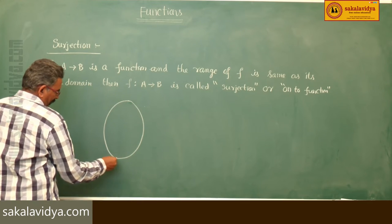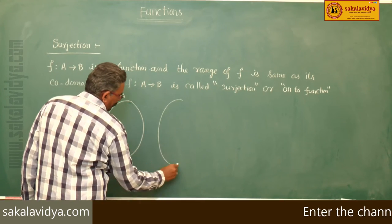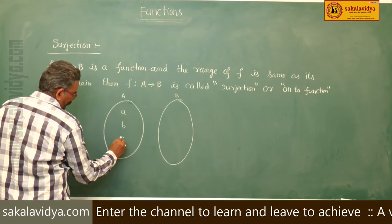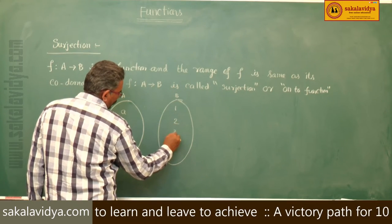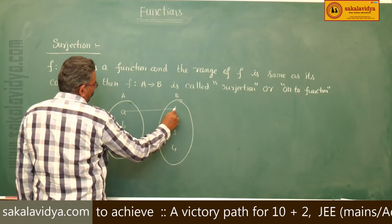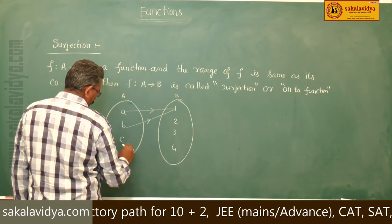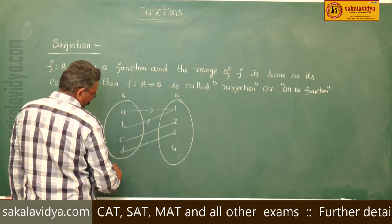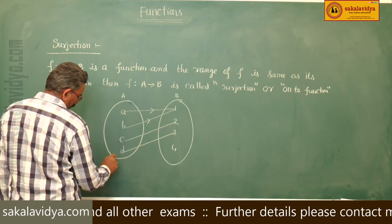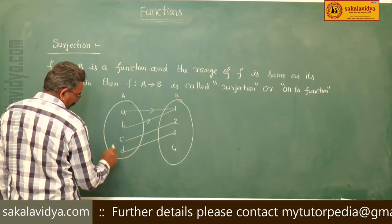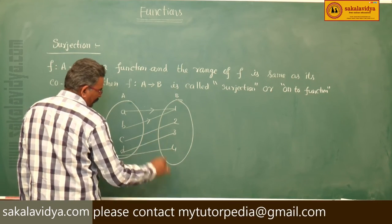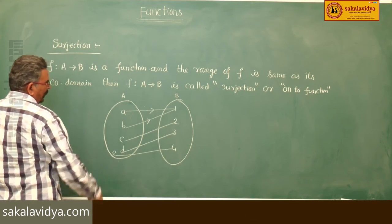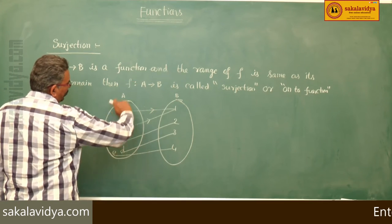Let us take figure A and B. Take elements a, b, c in A and 1, 2, 3, 4 in B. Here, a maps to 1, b maps to 1, c maps to 2, d maps to 3, and e maps to 4. Every element of A has a pre-image in B.